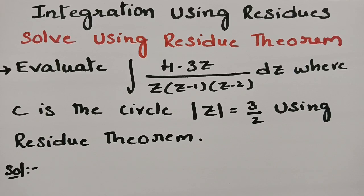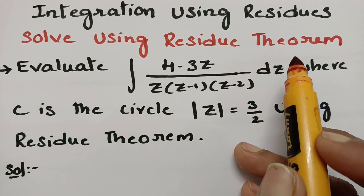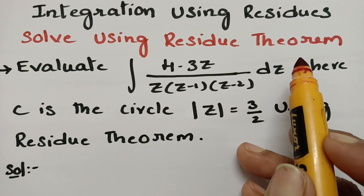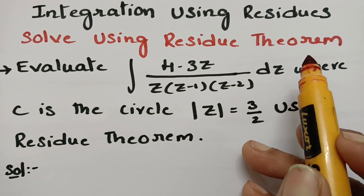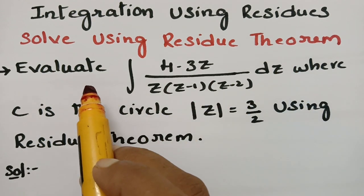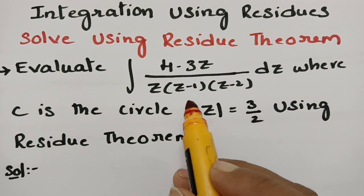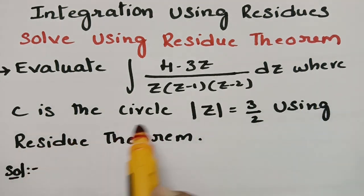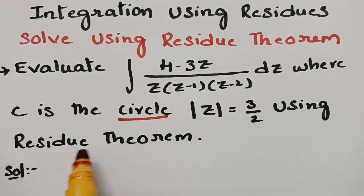Today's video is on integration using residues. We are going to solve the problem using the residue theorem. The problems related to the residue theorem are the most important questions. We have to evaluate the integral of (4 minus 3z) by z(z minus 1)(z minus 2) dz, where C is the circle |z| = 3/2, using the residue theorem.